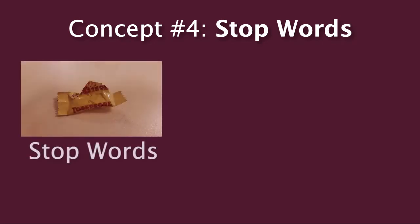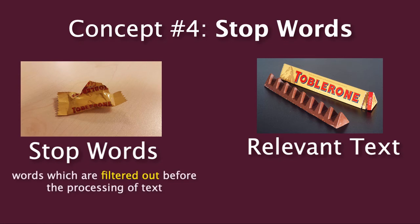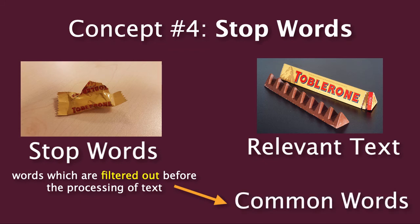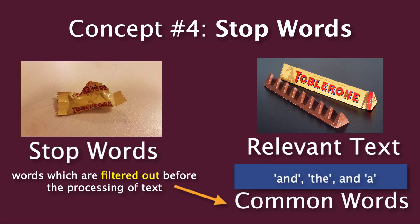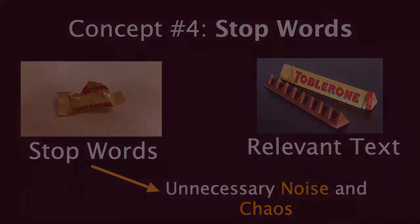Let's move on to our next concept: stop words. Think of stop words like the candy wrapper and the relevant text as the candy. Stop words are words which are filtered out before the processing of text, and usually refer to the most common words like 'and,' 'the,' and 'uh.' There are a ton more stop words than these, but the main point is that these words are removed because they add a lot of unnecessary noise and chaos when we're trying to process text.